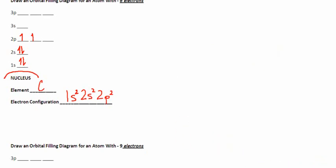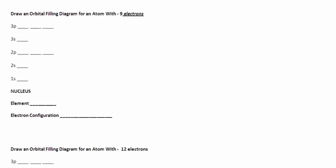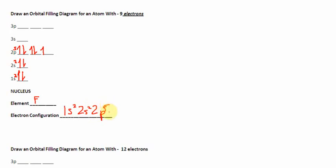Let's scroll down to the next example. In this case I have 9 electrons — let's place them: 1, 2, 3, 4, 5, 6, 7, 8, 9 electrons. The element is fluorine because it has 9 protons. The electron configuration: on the first energy level the S orbital has 2 electrons — that's 1s2. Second energy level: 2s2. And finally the 2p orbital — count the arrows — 2p5. That carries us to the end of our worksheet. Hope you now know where the electrons are located in an atom and can express them using electron configuration and orbital filling diagrams. Bye!